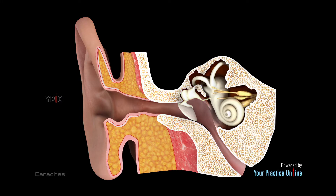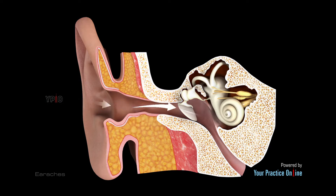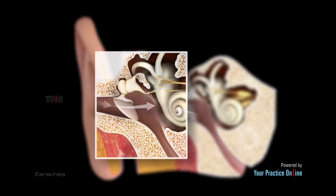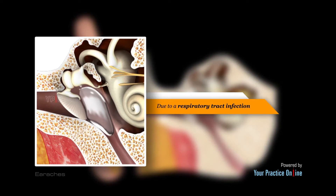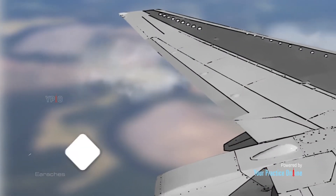Outer ear infections usually occur due to scratching or introducing an object into the ear canal. Water that enters the ear canal can soften the skin and encourage an infection. Fluid may build up in the middle ear due to a respiratory tract infection and lead to an ear infection. Respiratory tract infections can also affect the inner ear.